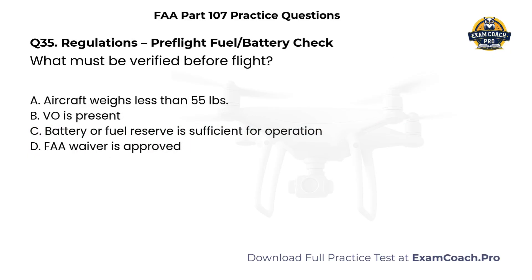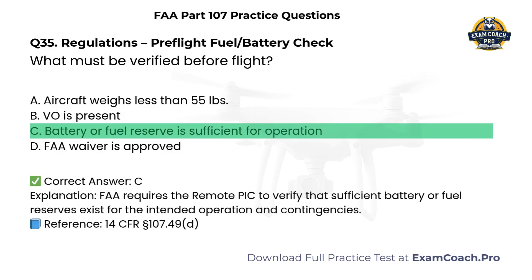Regulations — Pre-Flight Fuel or Battery Check. What must be verified before flight? A. Aircraft weighs less than 55 pounds. B. Visual observer is present. C. Battery or fuel reserve is sufficient for operation. D. FAA waiver is approved. Correct answer: C. Battery or fuel reserve is sufficient for operation. The FAA requires the remote PIC to verify that sufficient battery or fuel reserves exist for the intended operation and contingencies.